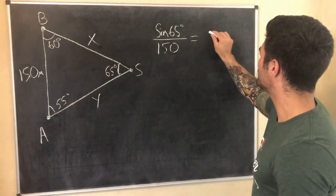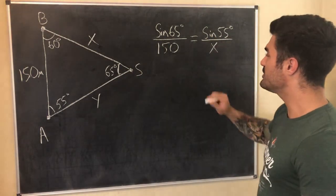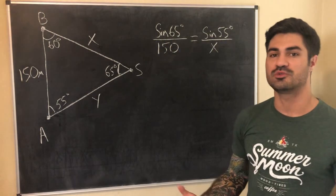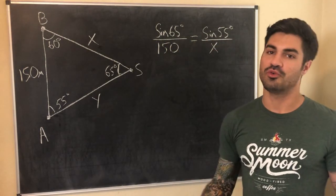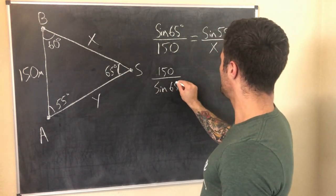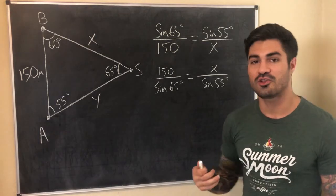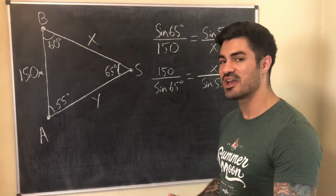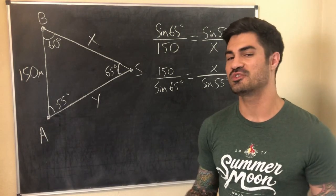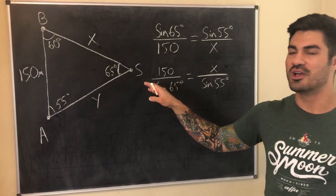So this equals sine of 55 degrees over x. There's a useful trick: when two ratios are equal you can flip both sides and the equality still holds. So instead of cross-multiplying, I flip both sides. You can generalize the law of sines as 'sine A over a equals sine B over b,' or equivalently 'a over sine A equals b over sine B.' When solving for a side, it's easier to have the side in the numerator.